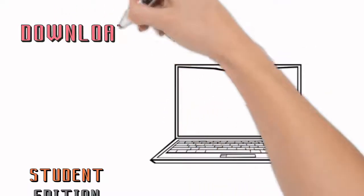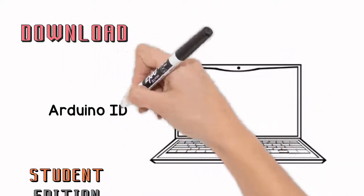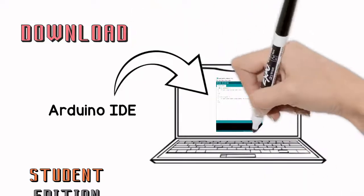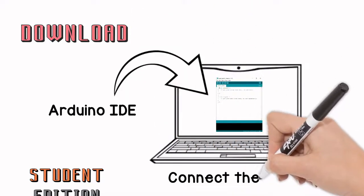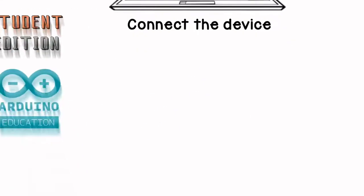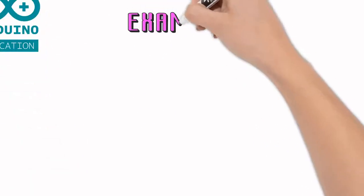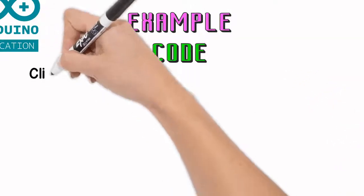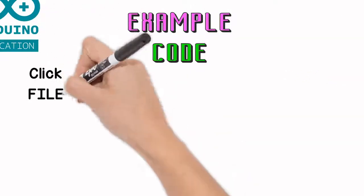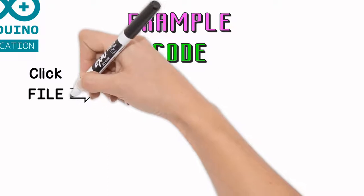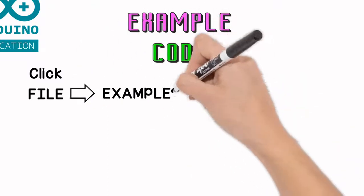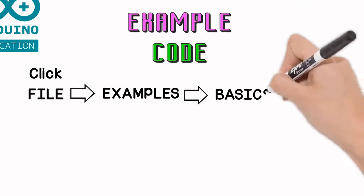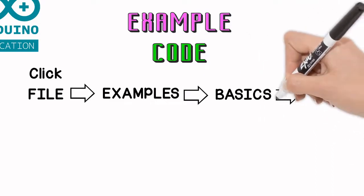Download the Arduino IDE and open, then connect the device. For example code, go to Toolboard, click File, Examples, Basics and Blink.